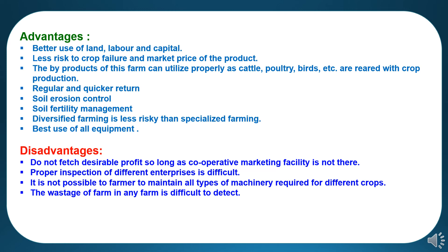Diversified farming is less risky than specialized farming, and there will be best use of all equipment available at the farm. Disadvantages: this system does not fetch desirable profit so long as cooperative marketing facilities are not present. Proper inspection of different enterprises is difficult at the same time. It is not possible for a farmer to maintain all types of machinery required for different crops, and the wastage on any farm is difficult to detect.